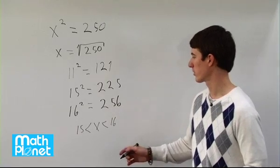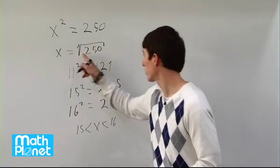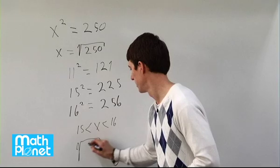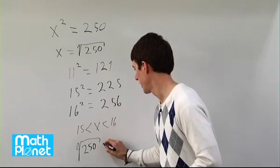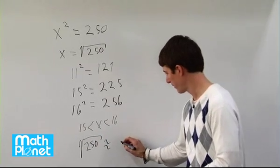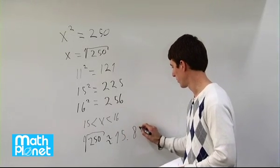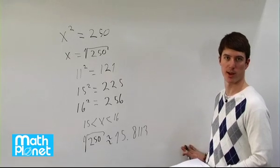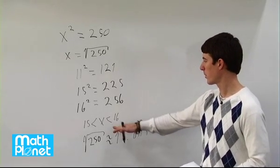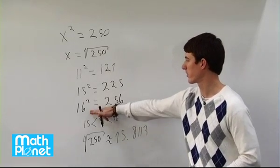If we use our calculators, we can see that the square root of 250 is approximately equal to 15.8113, and then of course there are many values after that because it's an irrational number. But we did see that we got close, something less than 16.